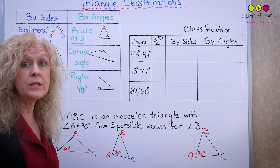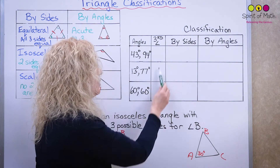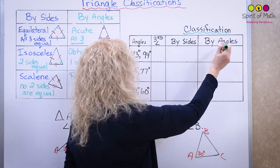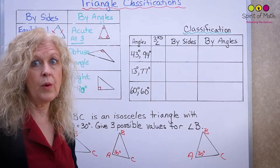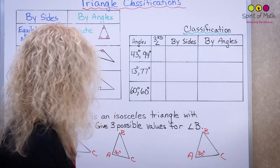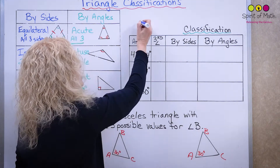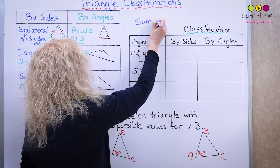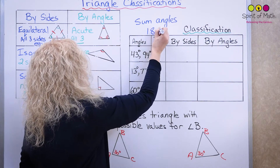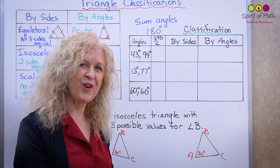Now let's do something with this. Here we've got two angles of a triangle and you have to figure out the third angle, then classify by sides and by angles. The sum of the angles of all triangles is always equal to 180 degrees — so if you know two angles, you can always figure out the third.